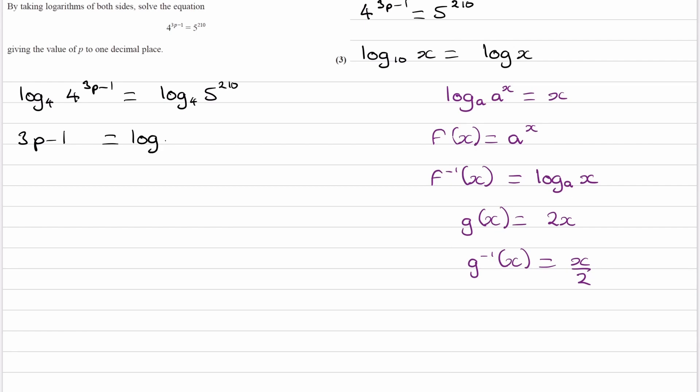So left-hand side becomes 3p minus 1. The right-hand side, well, let's just keep it as it is for now. So you may run into some trouble here because if you were to put this in your calculator to get it as a decimal, or if you were to rearrange it for p first and then put it in your calculator, this part here, you wouldn't be able to get a result. You'll get a math error. And the reason for that is because 5 to the power of 2.10 is too big of a number for you to be able to compute in your calculator.